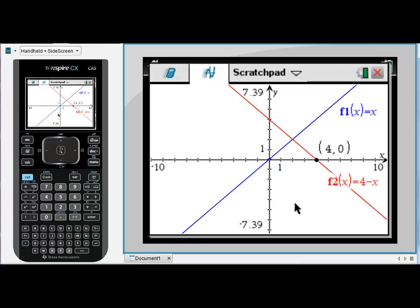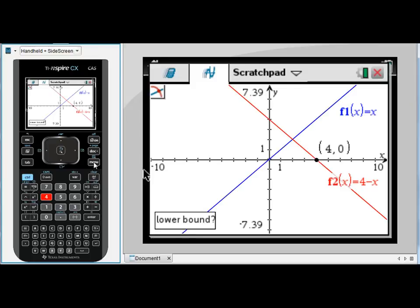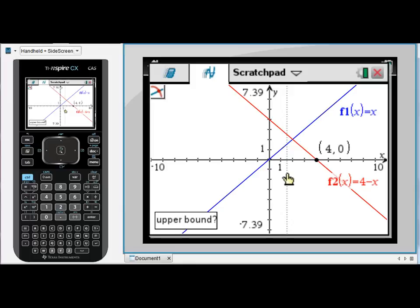The other reason I wanted to show you two graphs is because something else we might be interested in would be menu 6 and this time 4 for intersection. We're looking at the intersection point between these two graphs. It will ask me for a lower and upper bound. Somewhere to the left of the intersection point, somewhere to the right of the intersection point. And I find that these two graphs intersect at the point (4, 0).